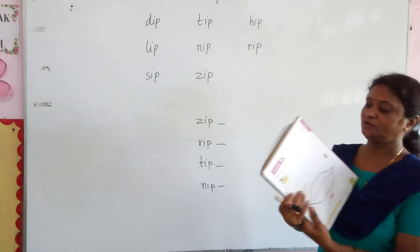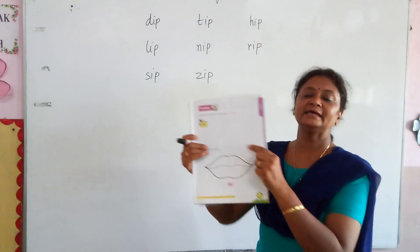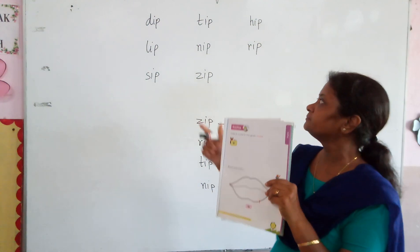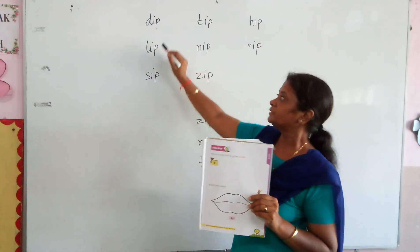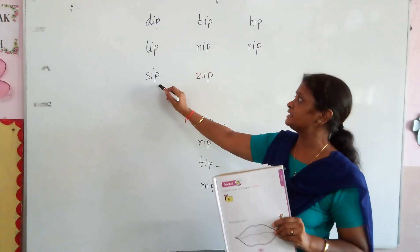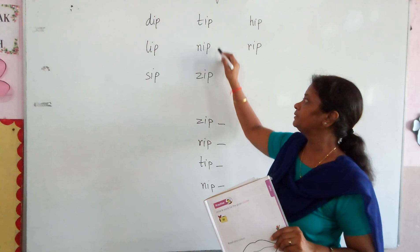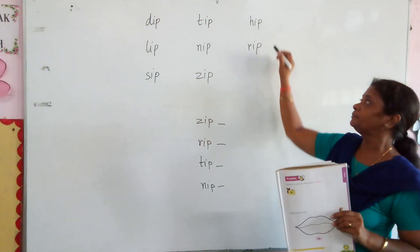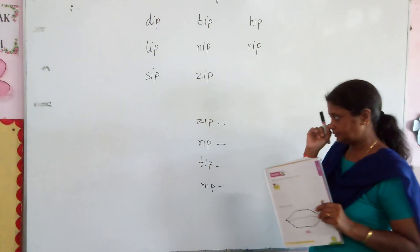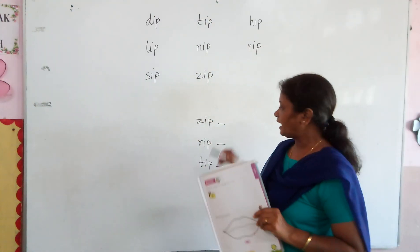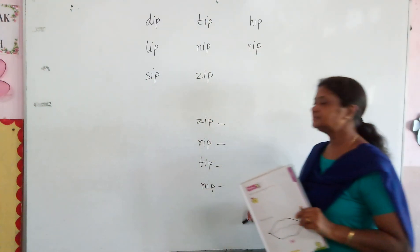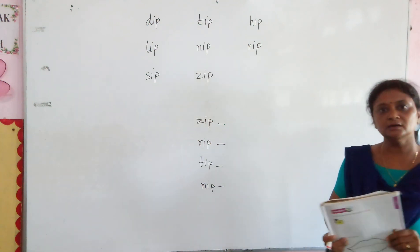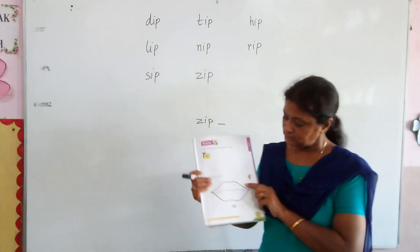In the exercise, what you have to do is write 8 Ipik words. And what are those? Tip, nip, sit, tip, nip, zip, tip, or rip. These are the writing words which you have to write in the notebooks.